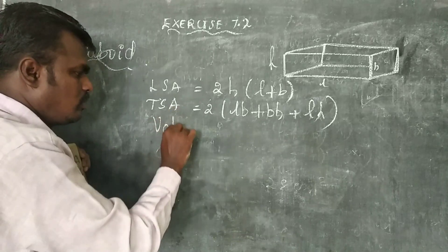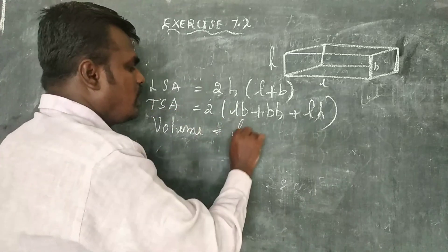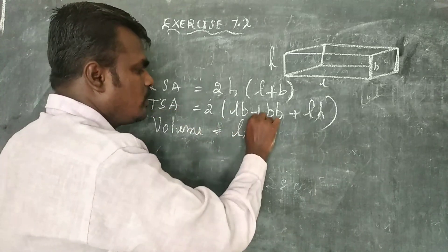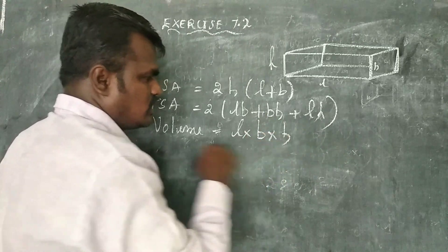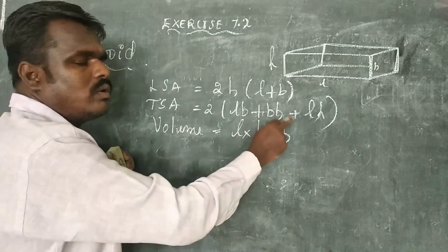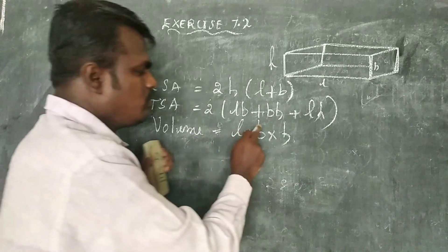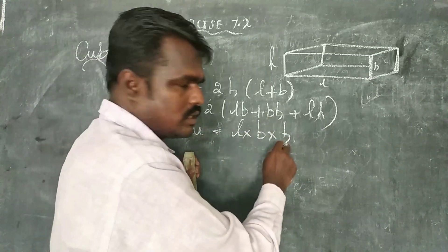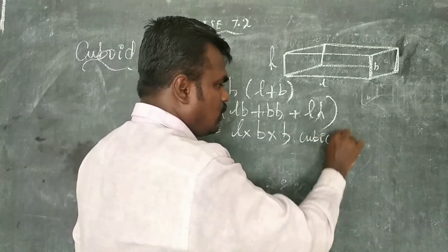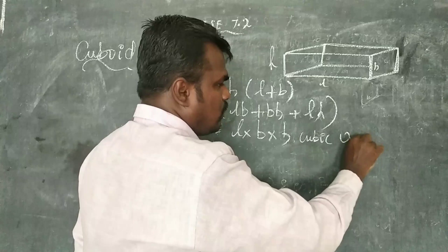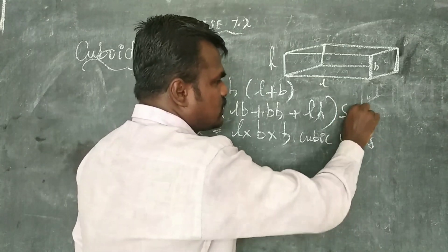Volume equals L into B into H. Volume is measured in cubic units, while surface area is in square units.